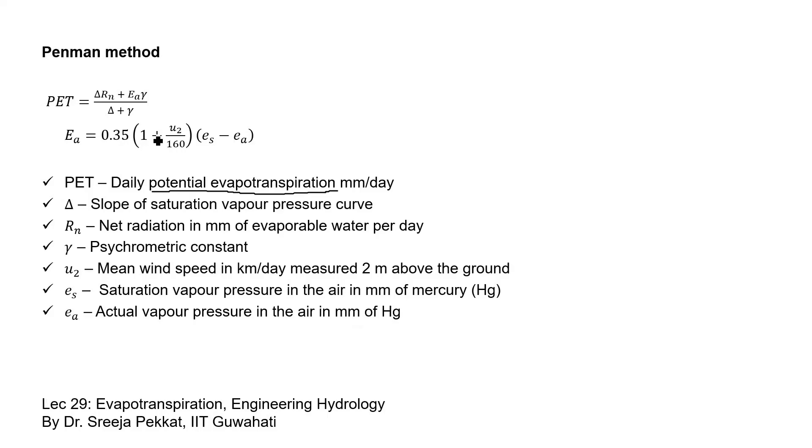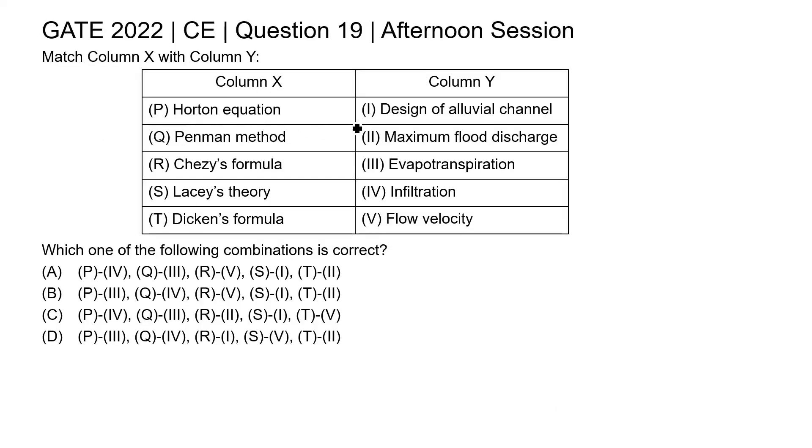Now coming to the question, we may say the correct match. Horton equation is used to define the infiltration rates, so this is 4. Pinman method is used to define evapotranspiration, so this is 3. Chez's formula is used to find the flow velocity in open channel flow, so this is 5. Lacey's theory is used to design stable alluvial channels, so this is 1. Dickens formula is used to find the maximum peak discharge, so this is 2.